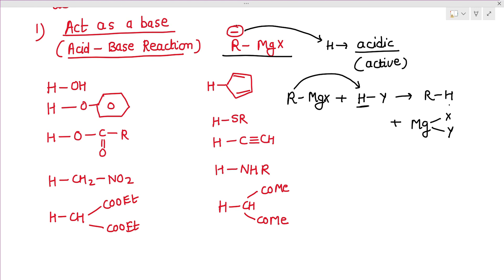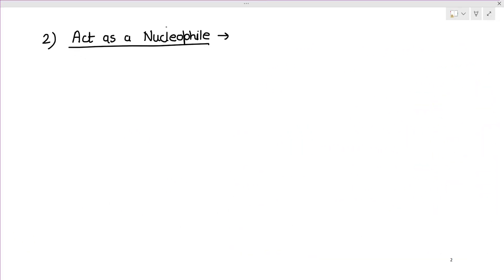How do we identify acidic hydrogens? These are hydrogens attached to groups such as O–H, N–H, S–H, terminal alkyne C–H, and similar groups. All these highlighted hydrogens are acidic. Whenever such acidic hydrogen is present, the alkyl group of RMgX abstracts the hydrogen and forms an alkane, while the rest of the molecule forms a magnesium salt.